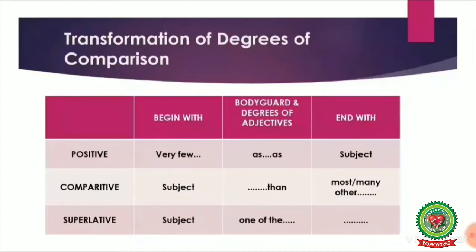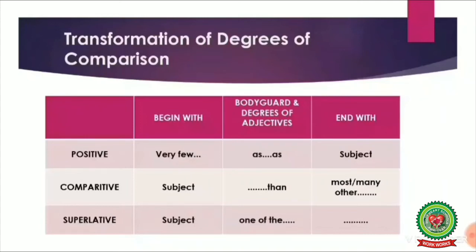In positive degree, the sentence will begin with 'very few', followed in the middle by the bodyguards and adjective in positive degree — e.g., 'as tall as' — and end with the subject. In comparative degree, the sentence will begin with the subject, then the comparative degree with 'than', ending with 'many/most other'. In superlative degree, the sentence starts with the subject, 'one of the' comes in the middle with the superlative adjective, and ends with the remaining part of the sentence.